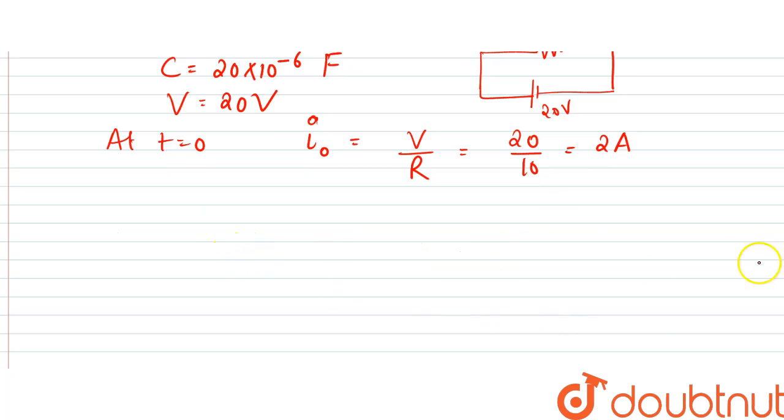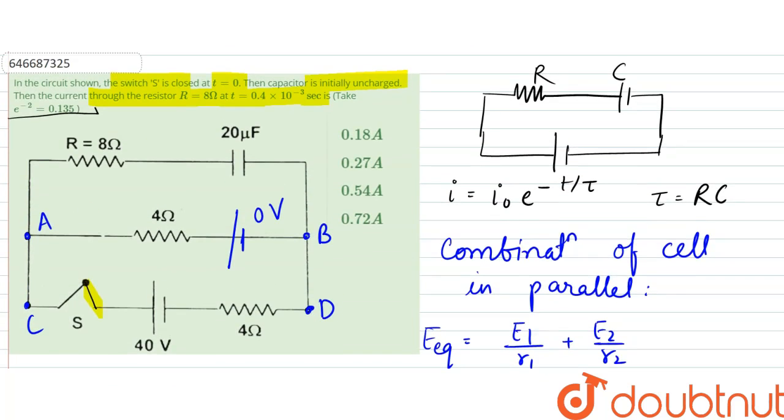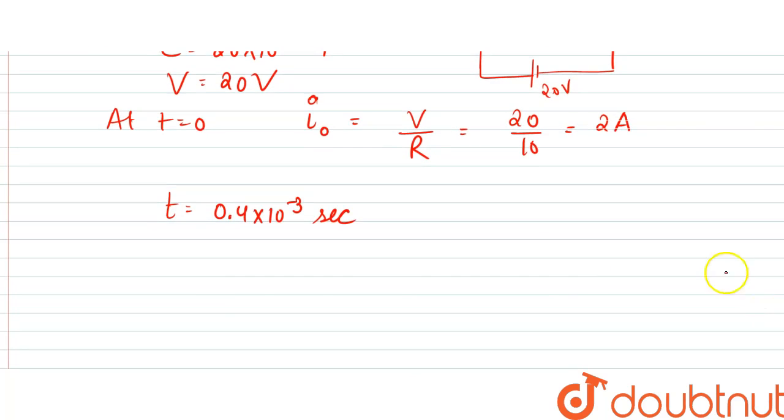But at time t equals 0.4 into 10 to the power minus 3 seconds, that is 0.4 into 10 to the power minus 3 seconds.